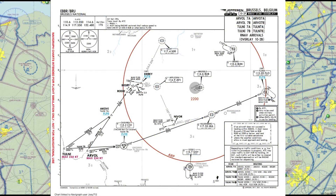Here we have an example of what you might get when you look up an arrival chart. Just like in the previous video, this particular example is a chart from Brussels airport in my home country, Belgium. A STAR is basically a fixed route that takes you from the final waypoint of your flight plan to the first waypoint of your approach.